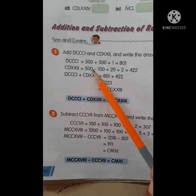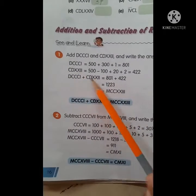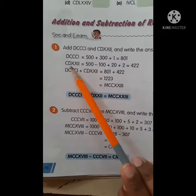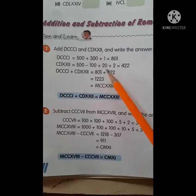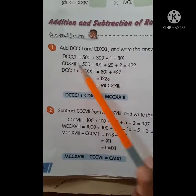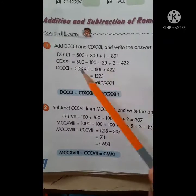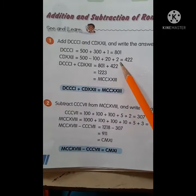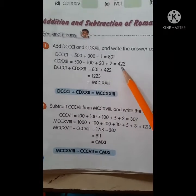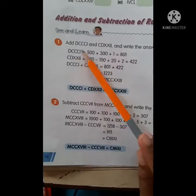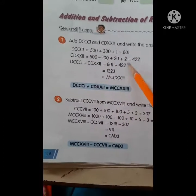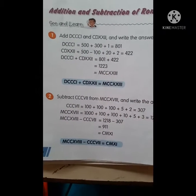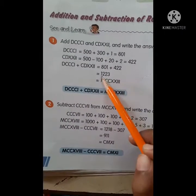The second numeral is CDXXII. CD is 500 minus 100, which equals 400. XX is 20 and II is 2. So 400 plus 20 plus 2 gives us 422. Now we add both answers: 801 plus 422 equals 1223.